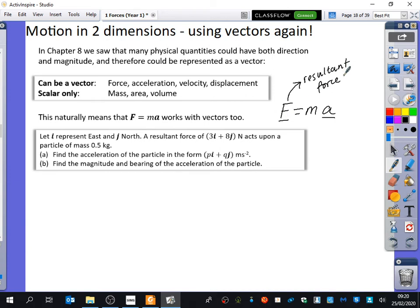Here is the resultant force, so those are going to be the forces added together. So it says here, let i represent east and j north. In other words, usually we say that i is x and that j is y, but now we've just got it as east and north, like the compass. A resultant force of 3i plus 8j Newtons acts upon a particle of mass 0.5 kilograms. Find the acceleration of the particle in the form pi plus qj meters per second squared.